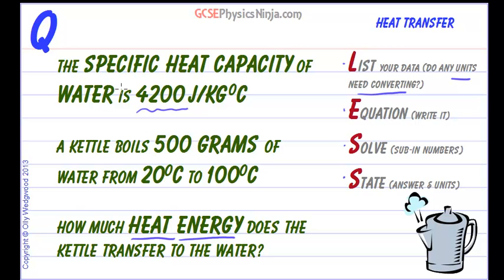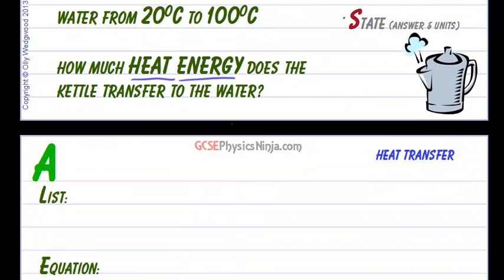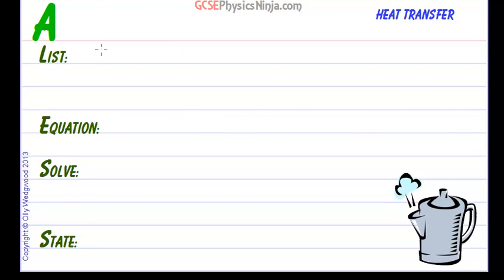So what do we know? We know the specific heat capacity, well that's got a symbol C, is 4200 joules per kilogram degree Celsius. So let's pop that down to start with. C equals 4200 joules per kilogram degree Celsius. And notice I am putting units down in the list. Very important.